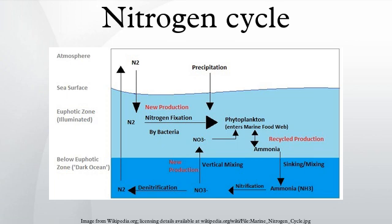The higher combustion temperature of hydrogen produces more NOx than natural gas combustion. Ammonia and nitrous oxides actively alter atmospheric chemistry. They are precursors of tropospheric ozone production, which contributes to smog and acid rain, damages plants, and increases nitrogen inputs to ecosystems. Ecosystem processes can increase with nitrogen fertilization, but anthropogenic input can also result in nitrogen saturation, which weakens productivity and can damage the health of plants, animals, fish, and humans.